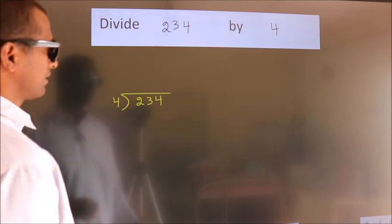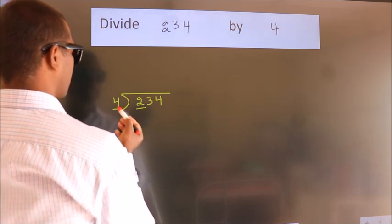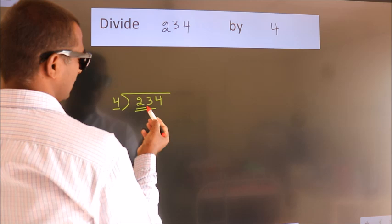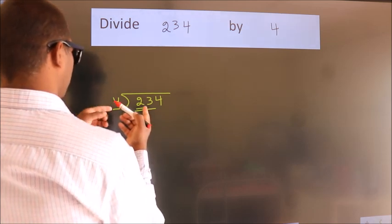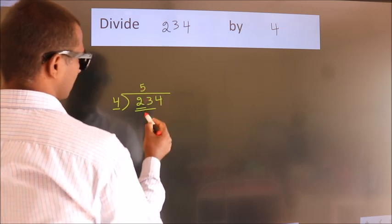Next, here we have 2. Here 4. 2 is smaller than 4, so we should take 2 numbers: 23. A number close to 23 in the 4 table is 4 fives, 20.